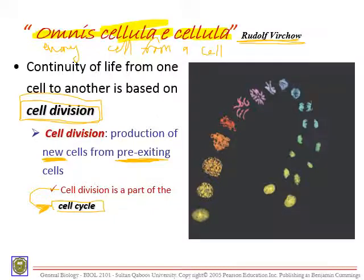The cell cycle is basically a series of steps or stages in a cell's life. Cell division is part of the cell cycle — it's just a small, tiny part of the bigger process which we call the cell cycle.